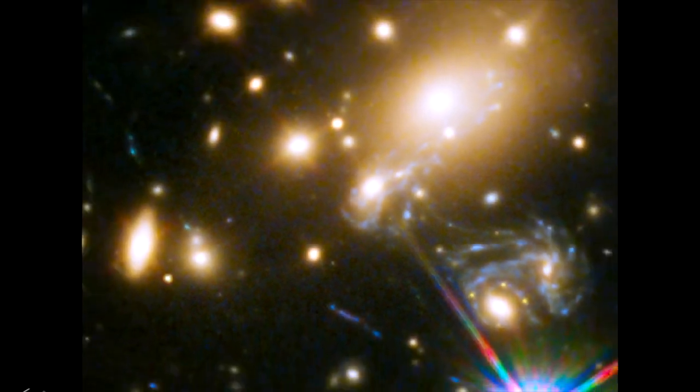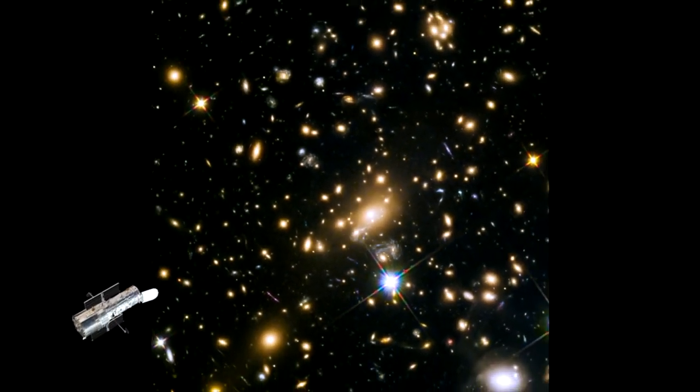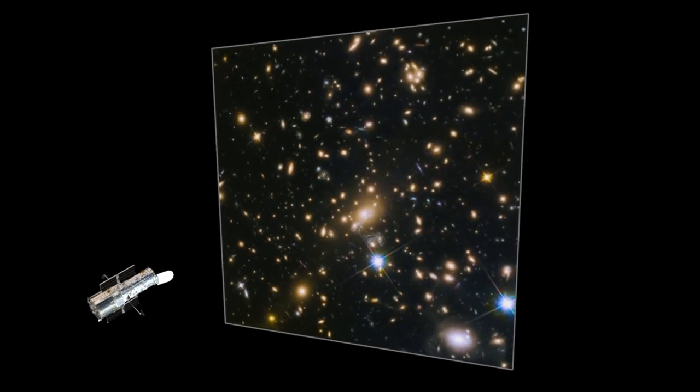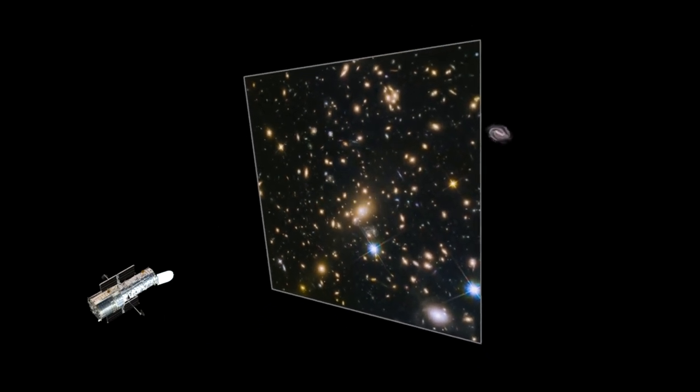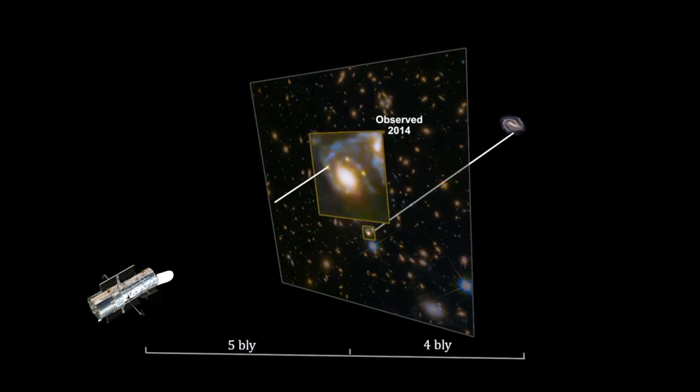For the first time in history, the time and location of a supernova was accurately predicted. We actually saw the supernova happen. Instead of detecting a flash in the sky and turning telescopes to its location, we had the telescopes already focused on the correct area and recorded the event from beginning to end.